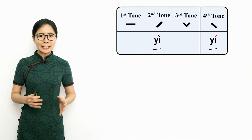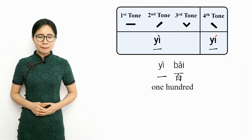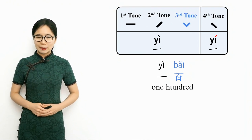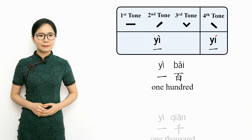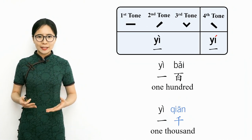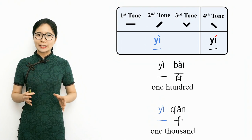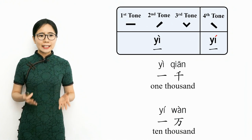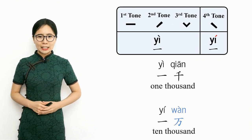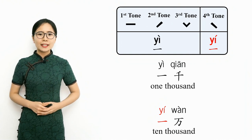Now let's look at examples of Yi followed by a number word. Yi bai means one hundred — Yi is followed by bai, which uses the third tone, so Yi is pronounced with the falling fourth tone: Yi bai, one hundred. Yi qian means one thousand — Yi is followed by qian, thousand, so the 'let it be Yi' rule does not apply: Yi qian, one thousand. Yi wan means ten thousand — Yi is followed by wan, which uses the fourth tone, so Yi changes to the second tone, the rising tone: Yi wan, ten thousand.